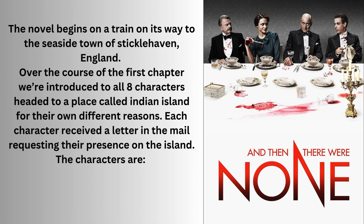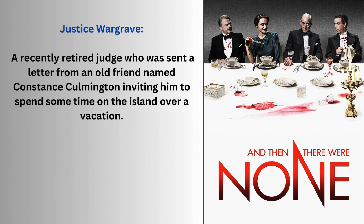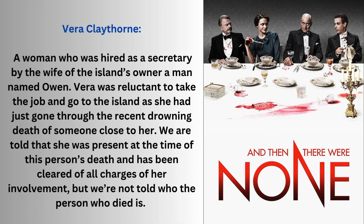Each character received a letter in the mail requesting their presence on the island. Justice Wargrave is a recently retired judge who was sent a letter from an old friend named Constance Culmington inviting him to spend some time on the island over a vacation. Vera Claythorne is a woman who was hired as a secretary by the wife of the island's owner, a man named Owen. Vera was reluctant to take the job and go to the island as she had just gone through the recent drowning death of someone close to her.